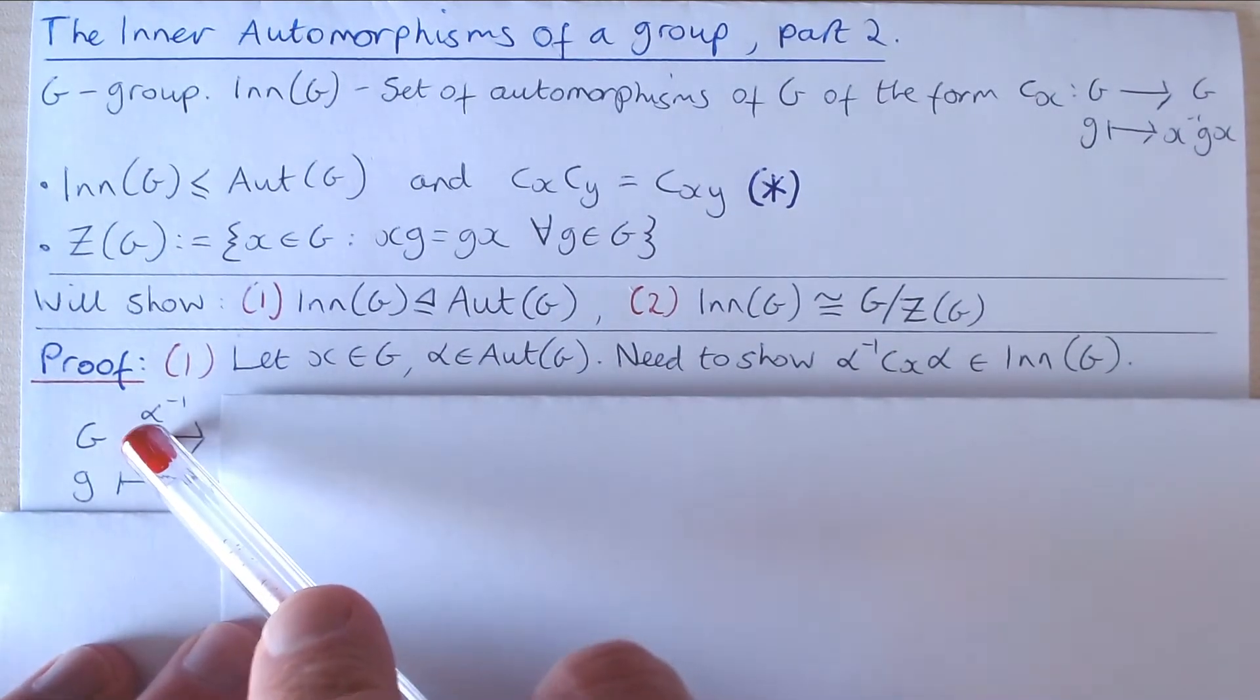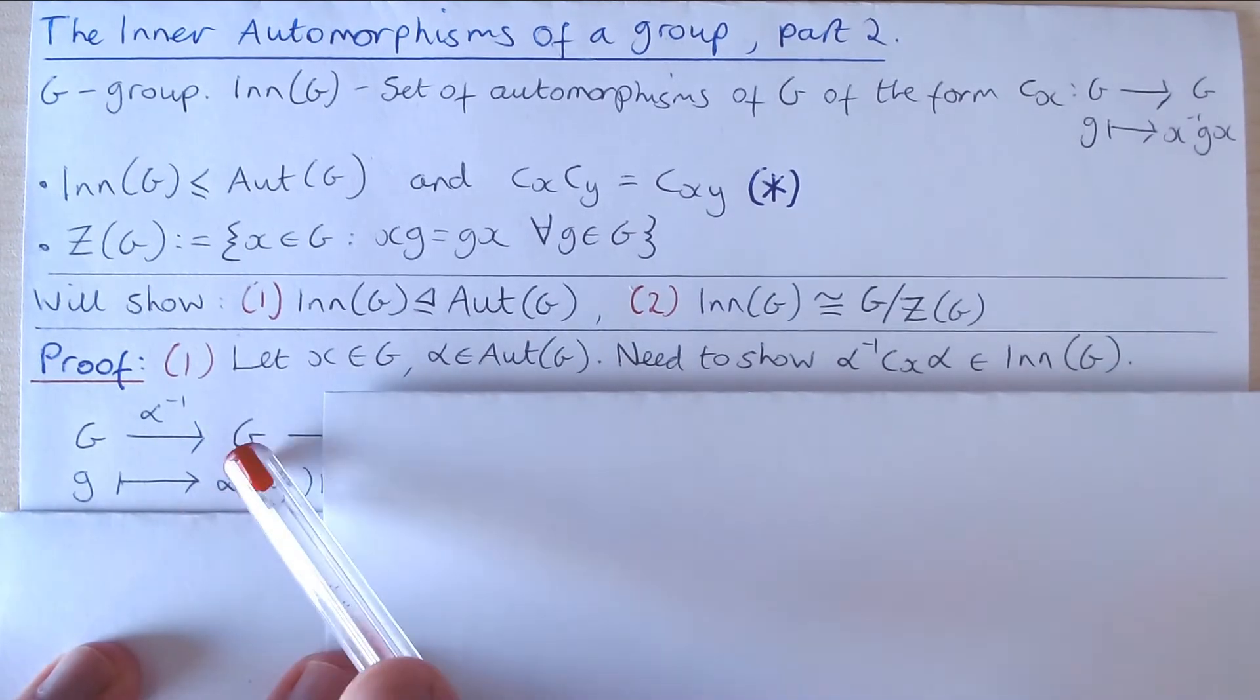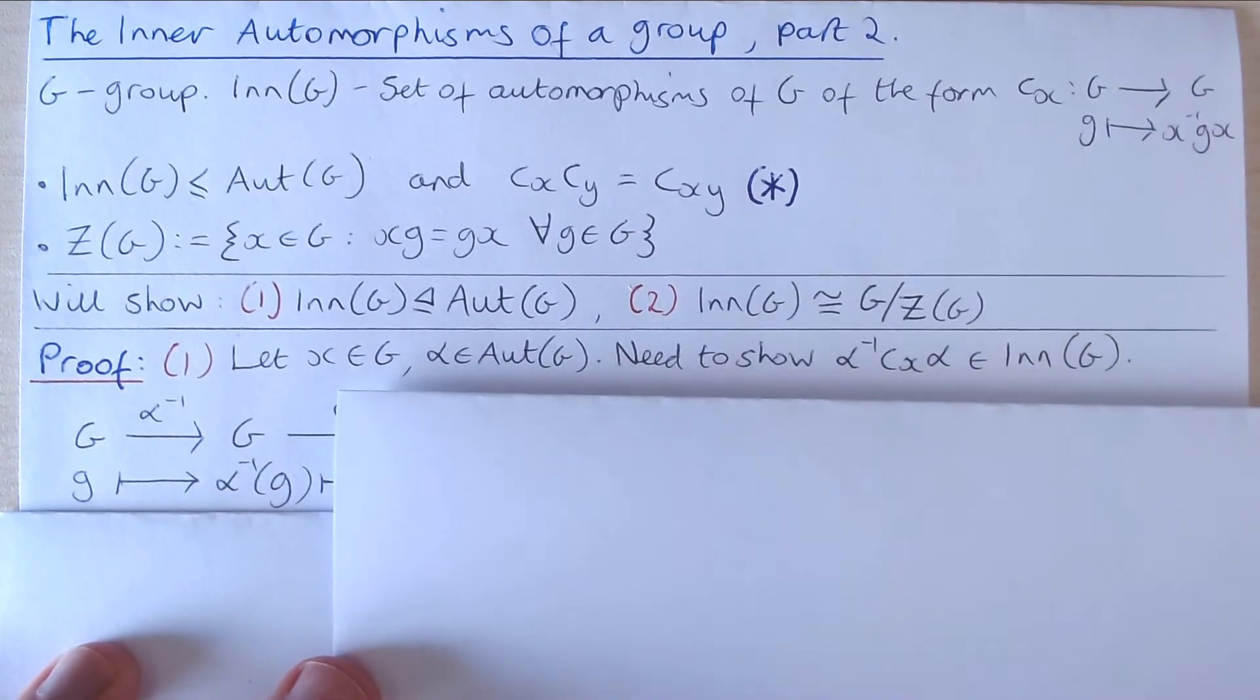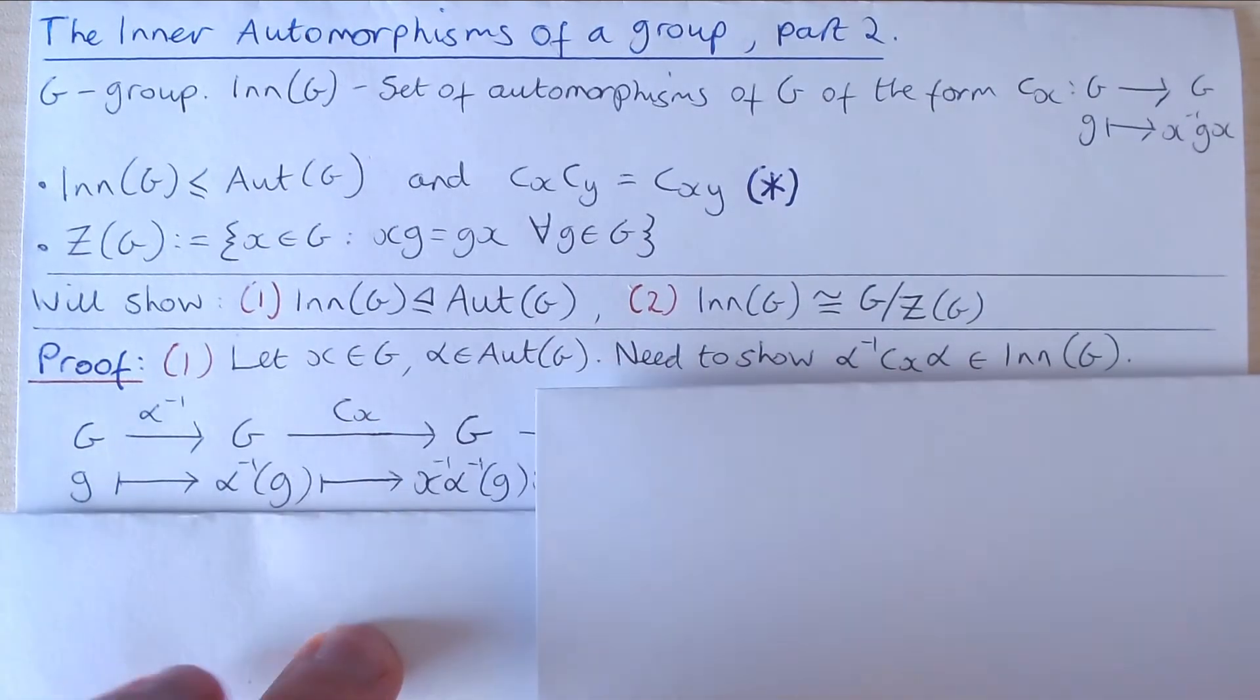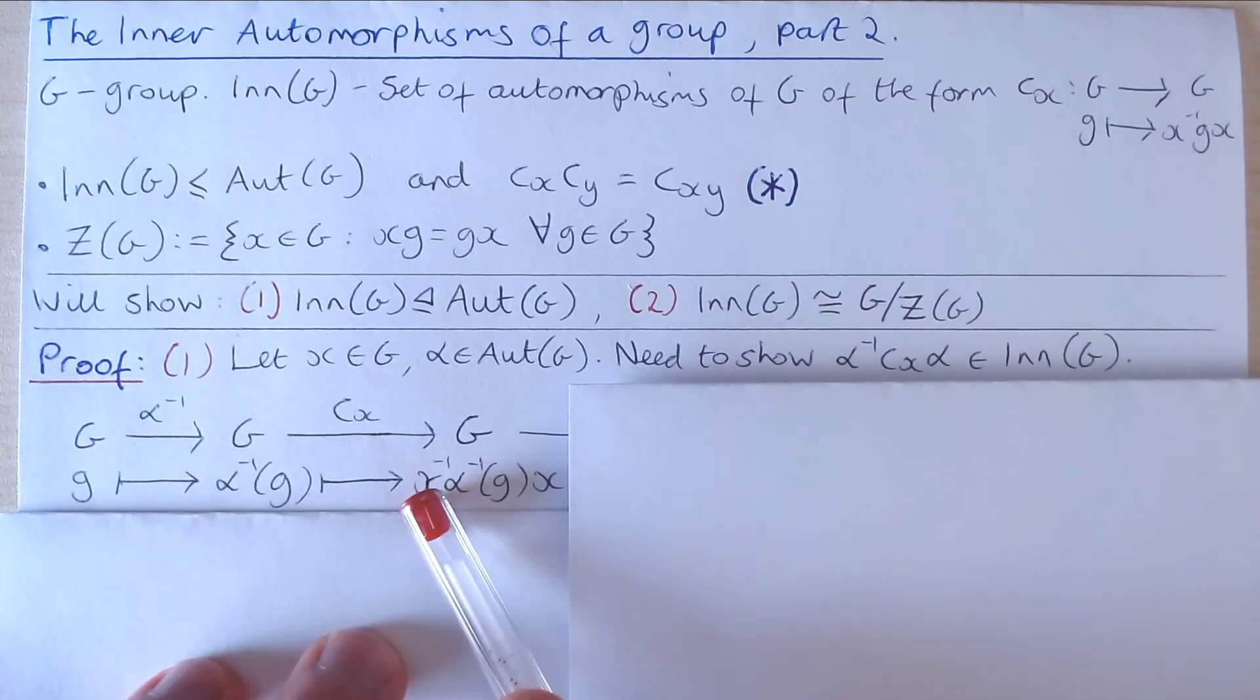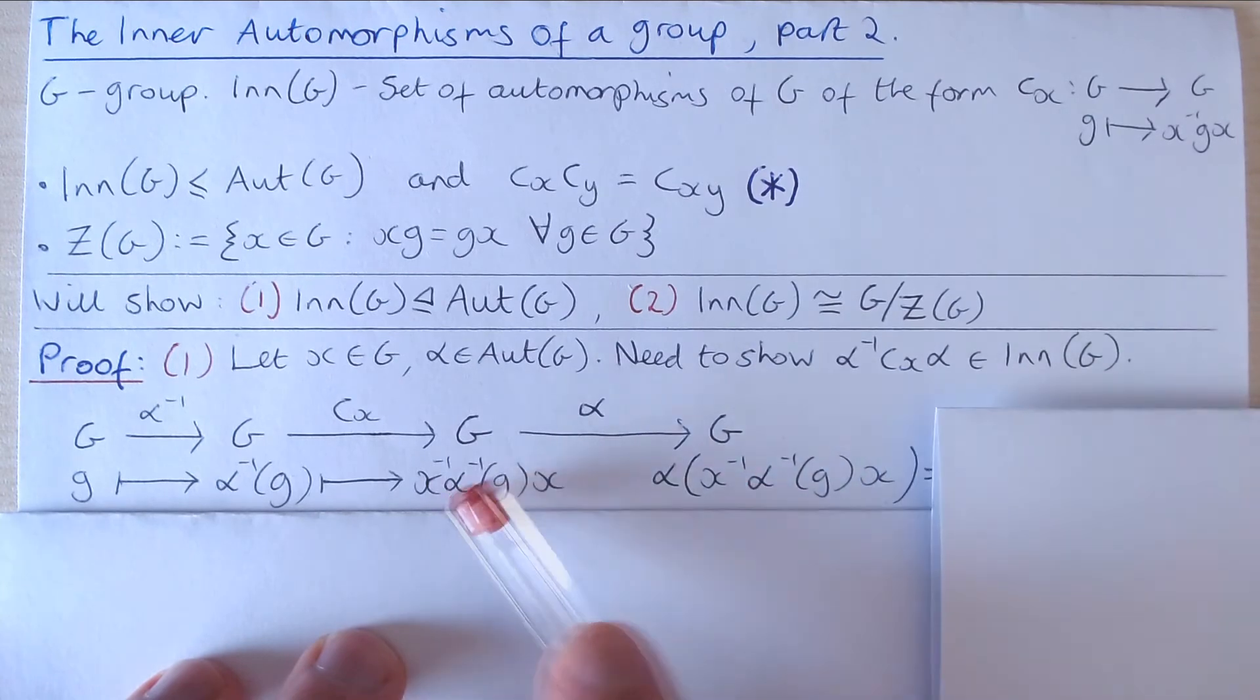So first of all we apply α⁻¹ to give us α⁻¹(g). Then we apply the inner automorphism C_x to give us x⁻¹α⁻¹(g)x. And then lastly we apply the automorphism α to give us α of this previous element of G.